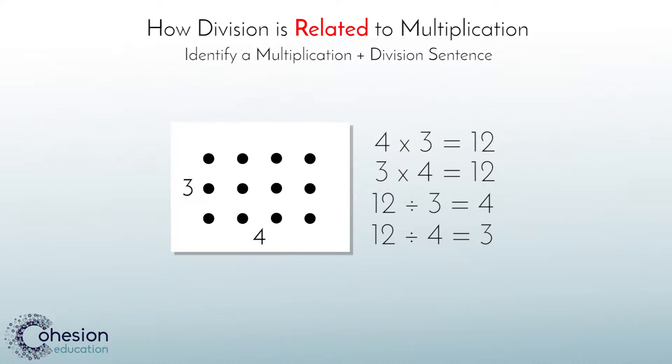Once students have a conceptual understanding of division, we should encourage students to solve division problems by using their knowledge of multiplication facts. To solve 12 divided by 3, students should think 3 times what gives me 12. The hope is that eventually students don't need the visual representations. Once they are able to fluently and accurately recite their multiplication facts, it should in turn help them to quickly identify their division facts.